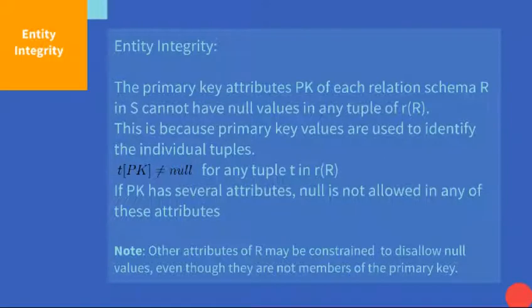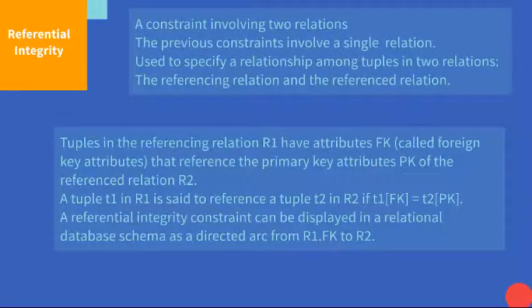The entity integrity constraint means that the primary key we have selected can never contain a null value for any tuple. The primary key attributes PK of each relation schema R in S cannot have null values in any tuple of any state of R. If it becomes null, you can't identify the tuple. So, entity integrity simply says: the primary key should not be null.